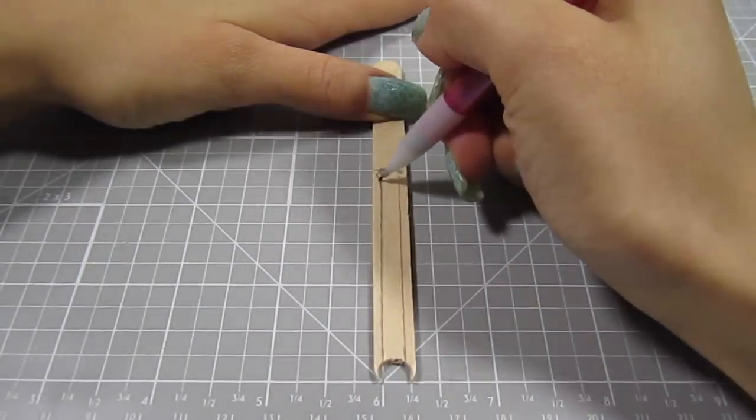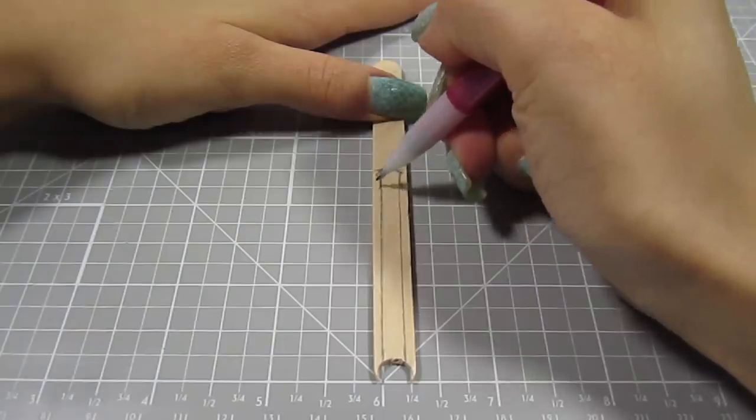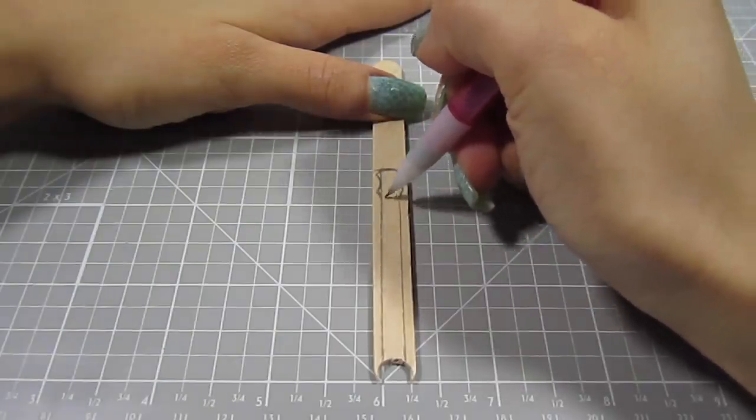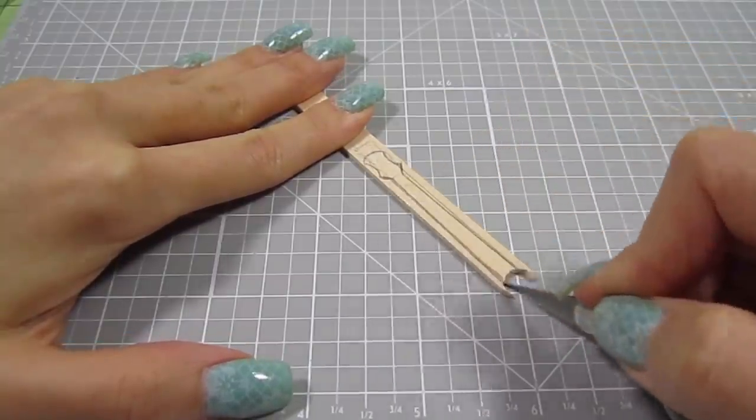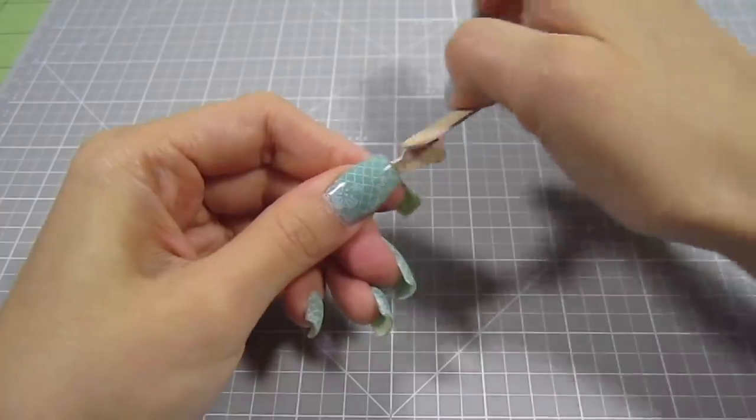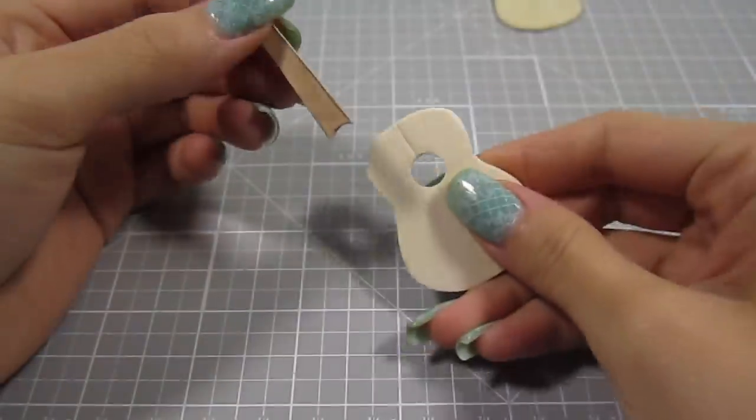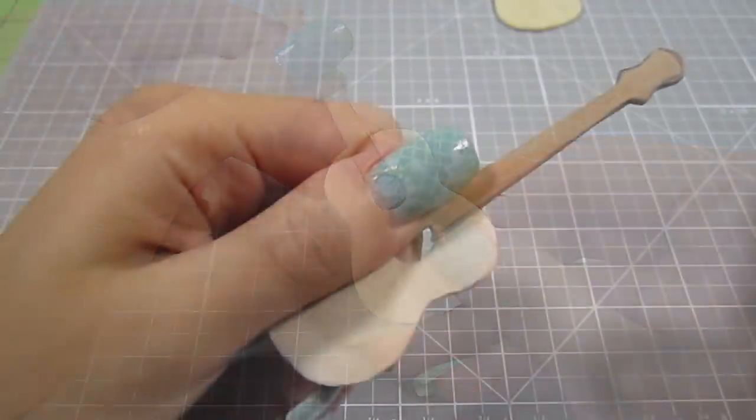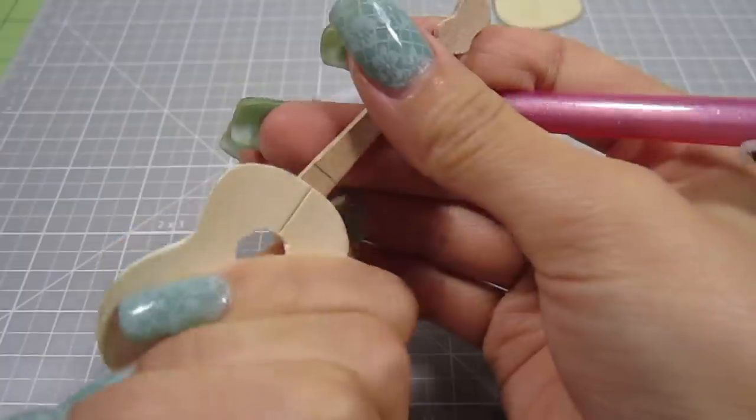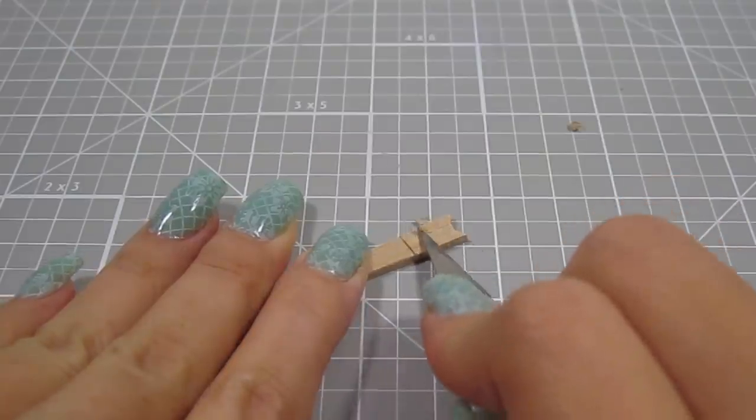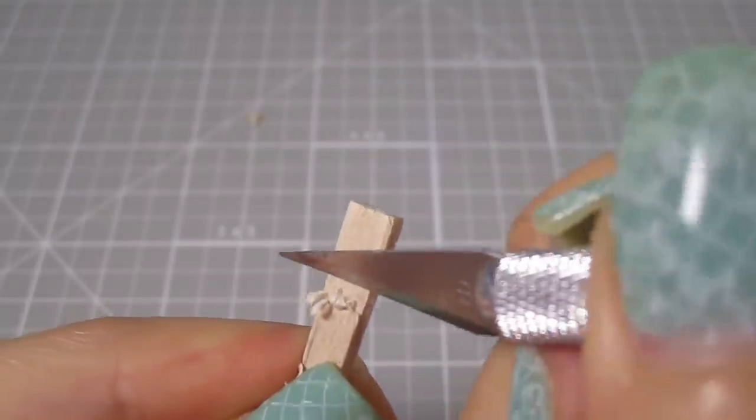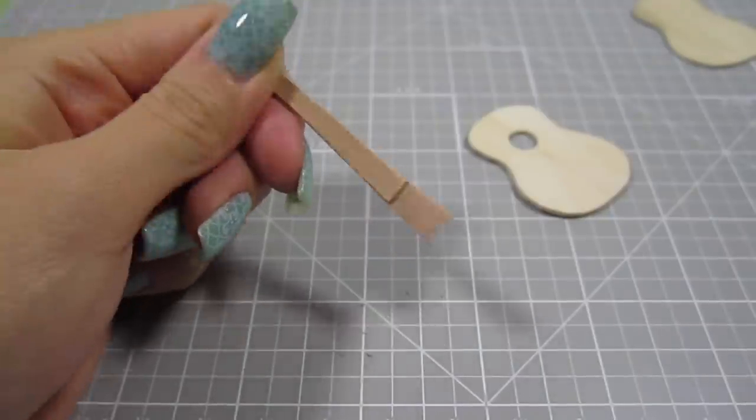Now draw on the headstock. There are so many headstock shapes, so go with whatever you like. This one is pretty simple. Cut that final shape out. Lightly sand it. Position it on the body right above the sound hole. Mark where the body ends. Thin that part of the neck out just a little bit. It will make the finished guitar look that much better when the two pieces fit together perfectly.